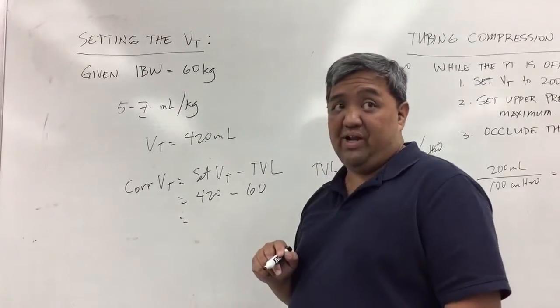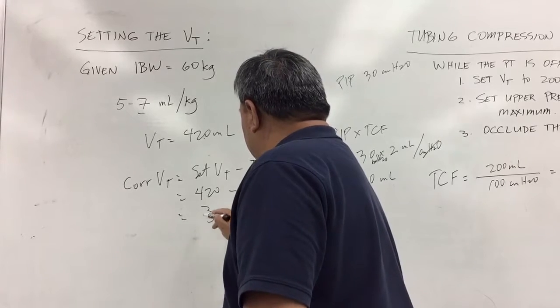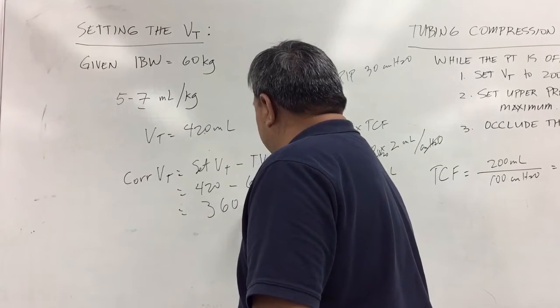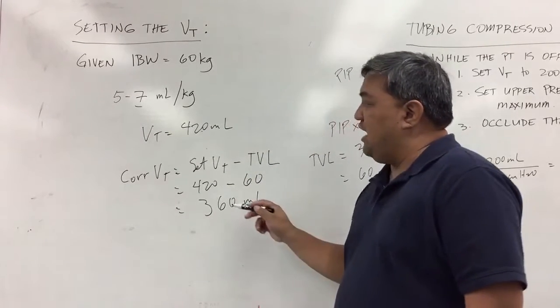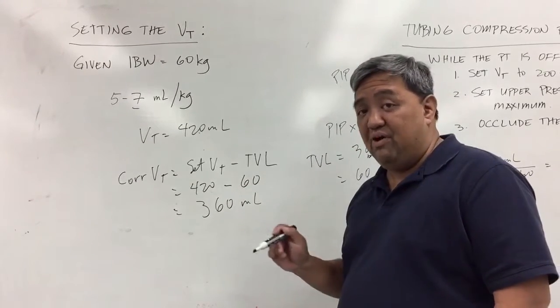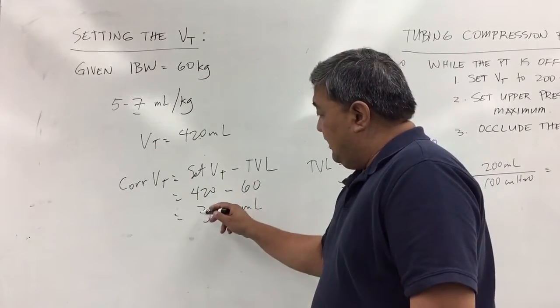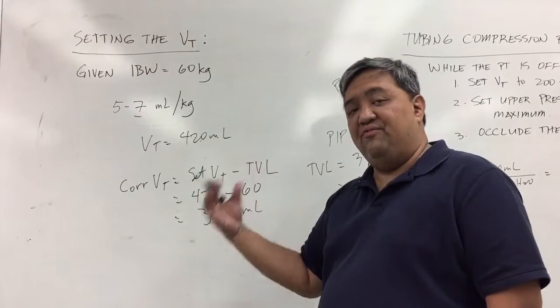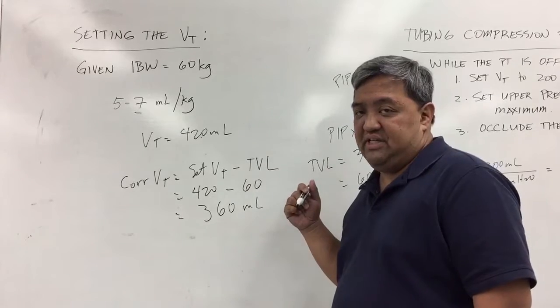If I do my math correctly, that's 360 mls. So that means the volume being received by the patient is 360 mls. However, once you have a ventilator that does not compensate for the TCF...